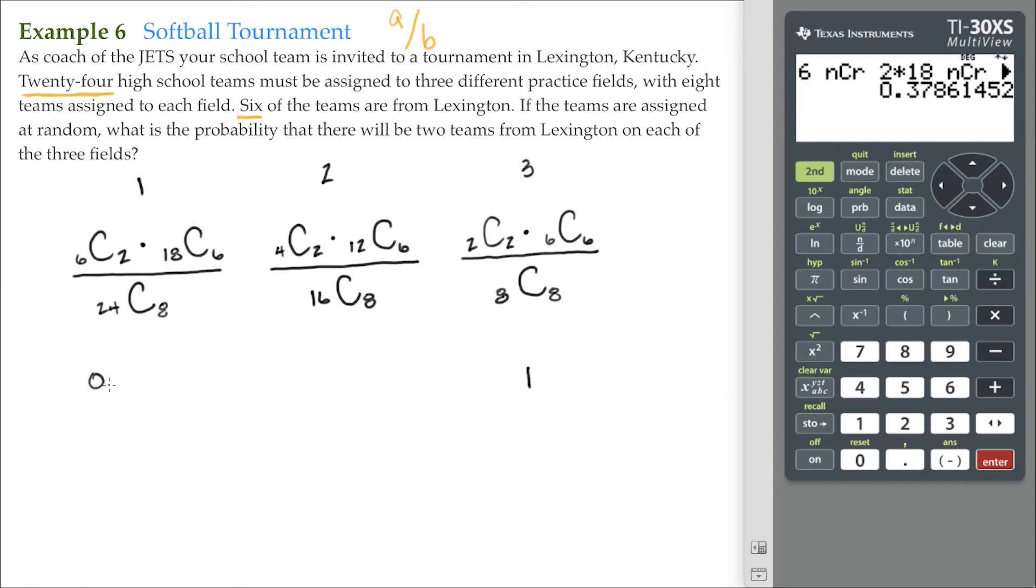So, that's approximately 0.3786. We do the same for the second field assignment.